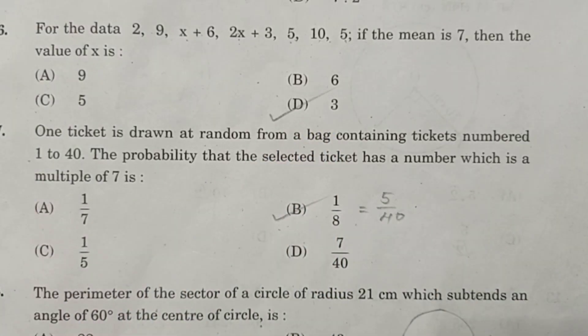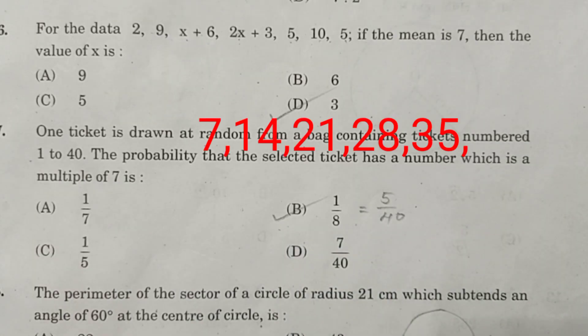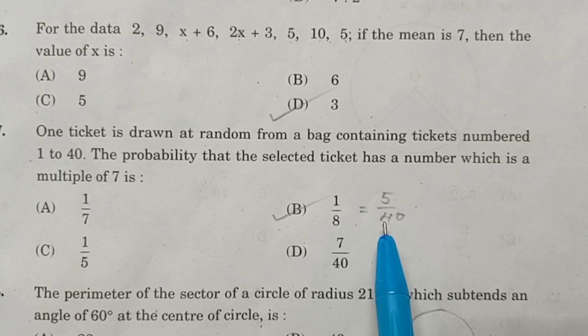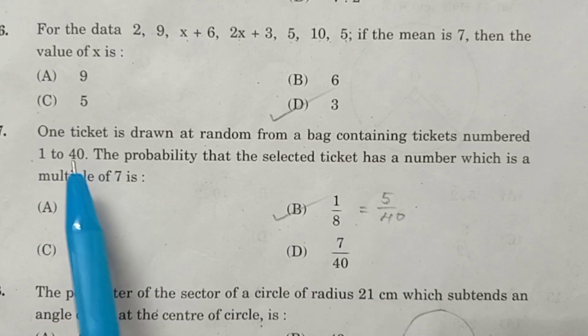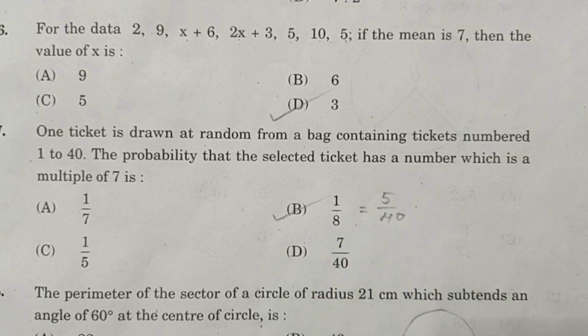Question number 7. A ticket is drawn randomly from a bag containing tickets numbered 1 to 40. The probability that the selected ticket has a number which is a multiple of 7. The multiples of 7 between 1 and 40 are 7, 14, 21, 28 and 35. That means we will get 5 numbers, therefore the required probability is 5 by 40. 40 is the total number of outcomes, therefore the correct answer is 1 by 8.